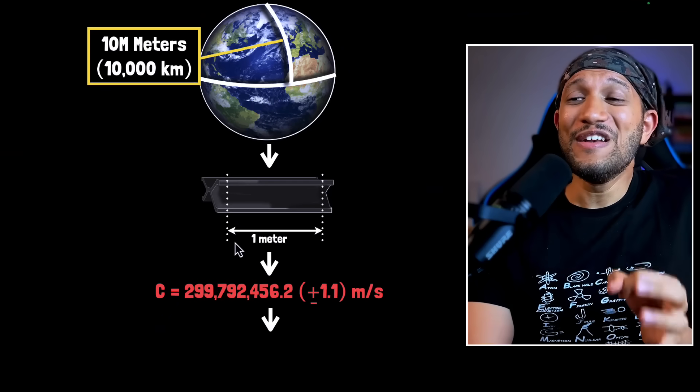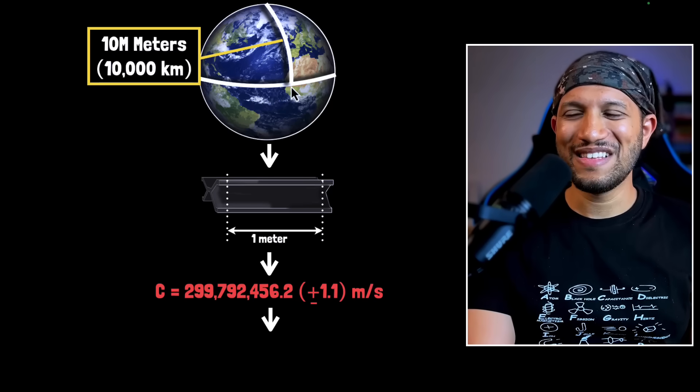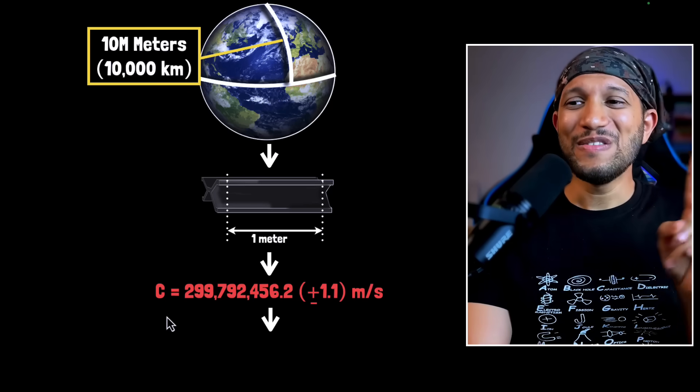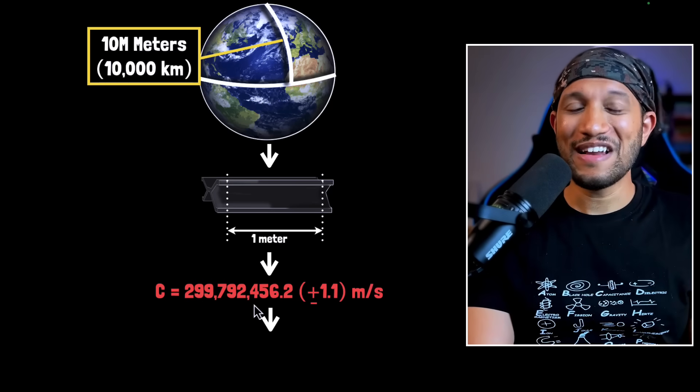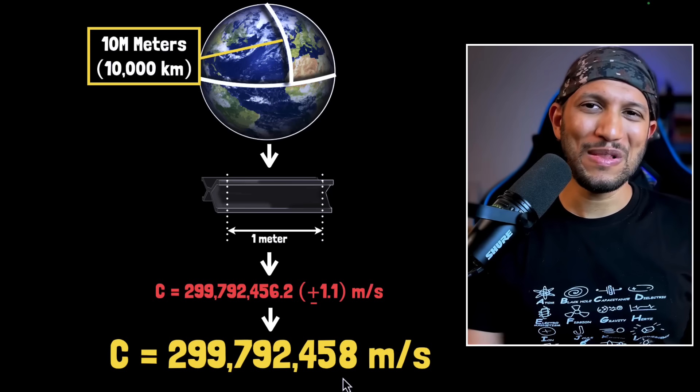So where did this definition of one meter come from? From the size of the earth. And it's from there, the speed of light was calculated. And finally, from there, we redefined the meter by fixing the speed of light to be this value.